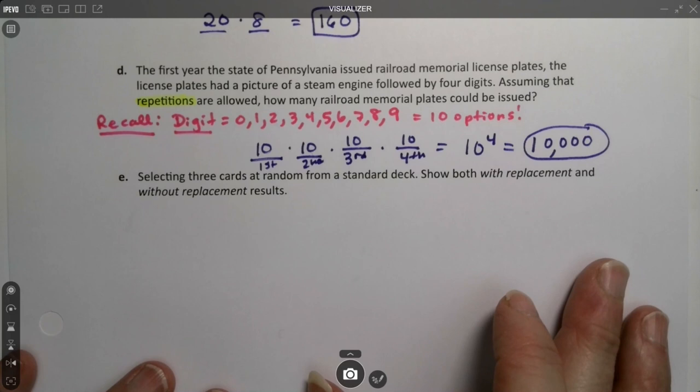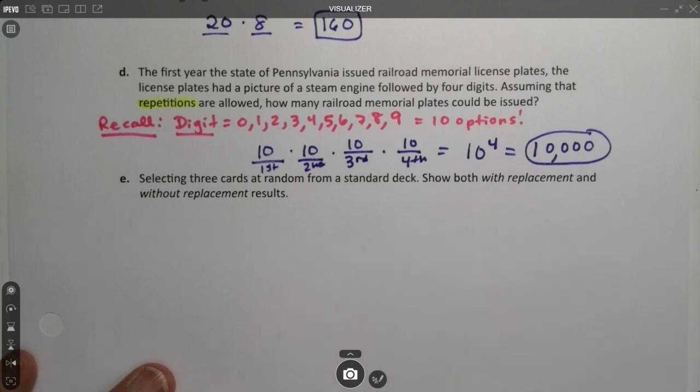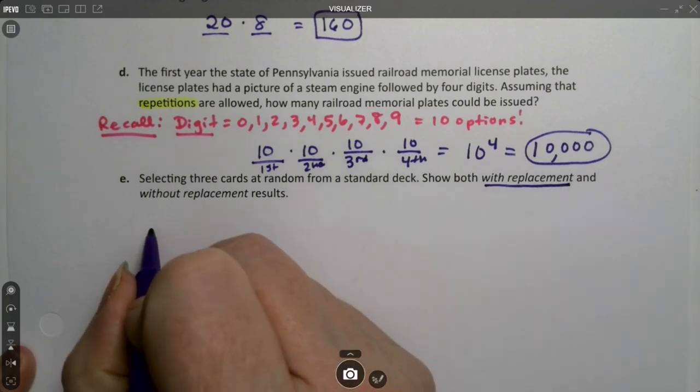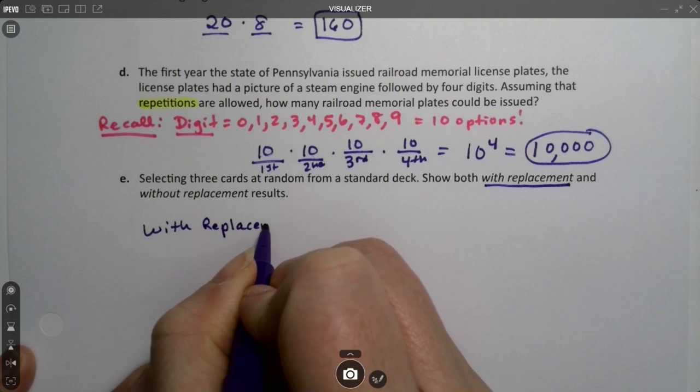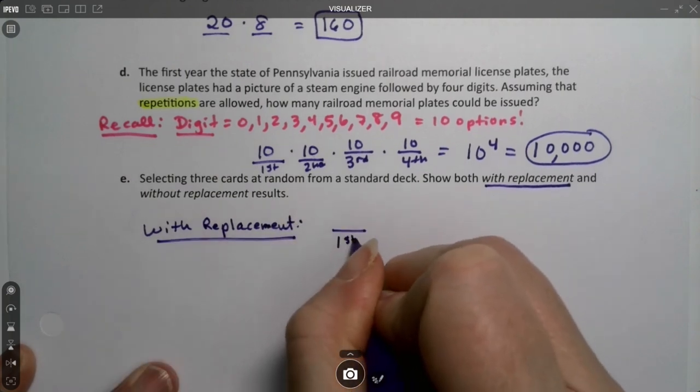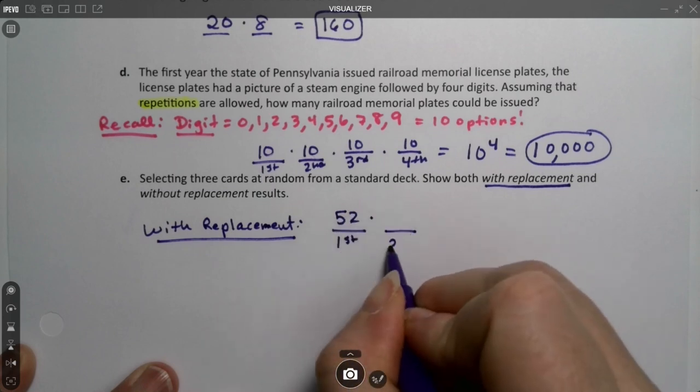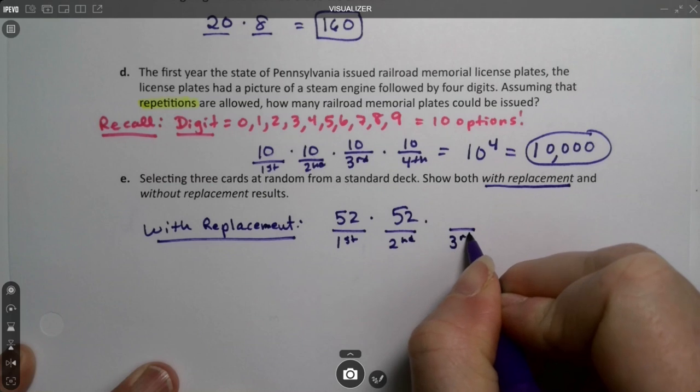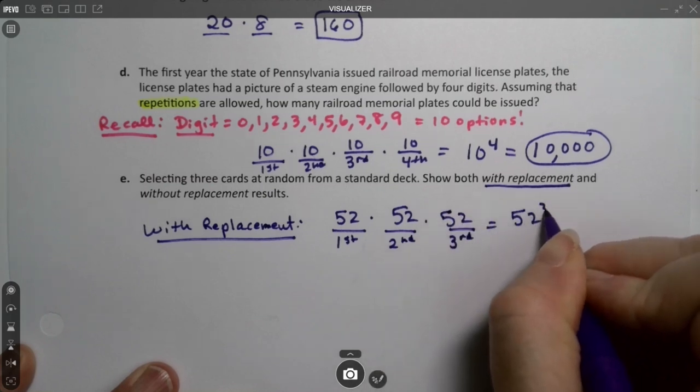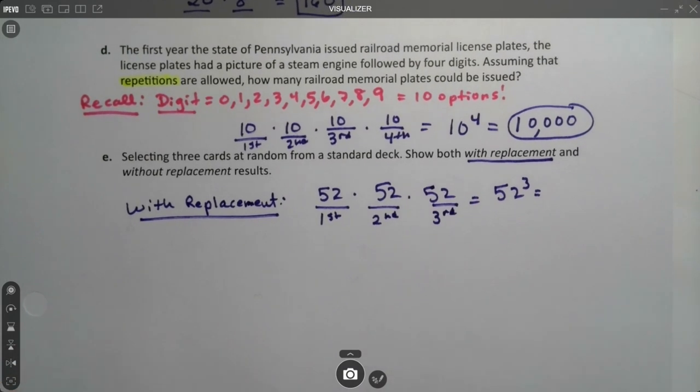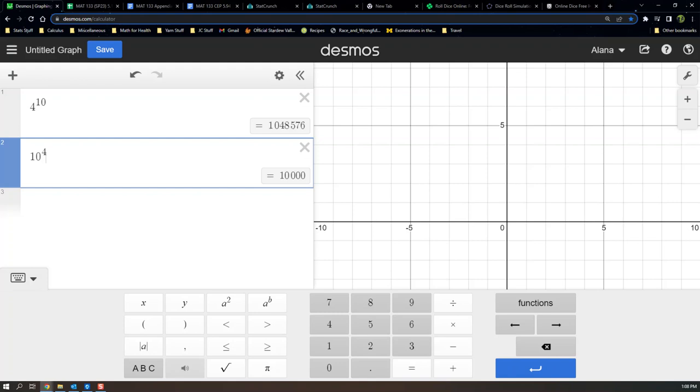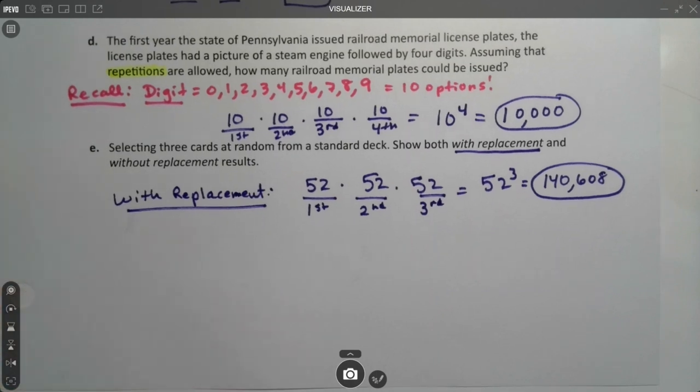Now you're going to select three cards at random from a deck. Show both with replacement and without replacement. So let's do with replacement first. With replacement, you're drawing these three cards. The first card has 52 options, the second card has 52 options, and the third card has 52 options. So we need 52 to the third. So 52 to the third is 140,608. Desmos uses a tiny little space in there in place of a comma to help you.